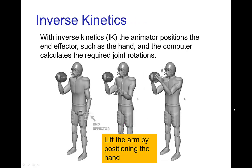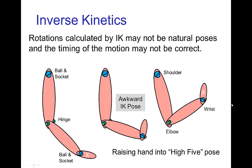For this reason, sometimes the motion is specified using inverse kinematics. In this case, the animator would control the position of a so-called end effector. The end effector might be the hand, so the animator would position the hand, and then the computer would calculate the angles for the elbow and the shoulder. Now, this inverse kinematics isn't foolproof in that the rotations that are calculated may not be natural poses.